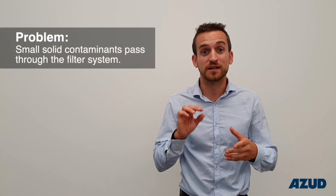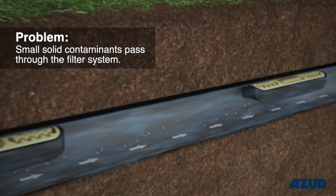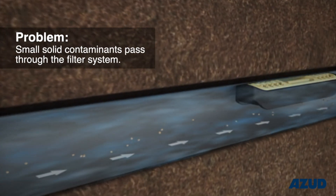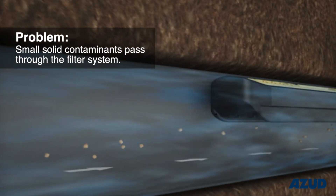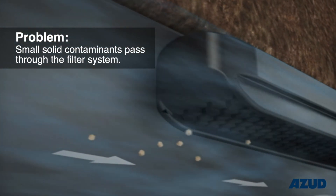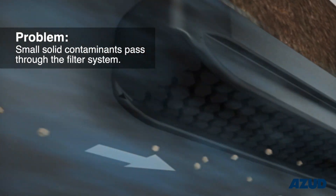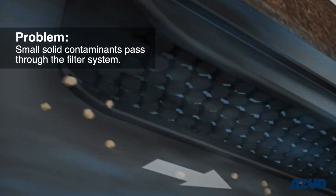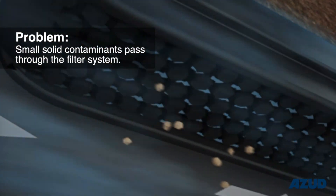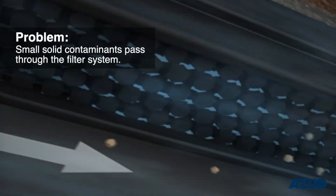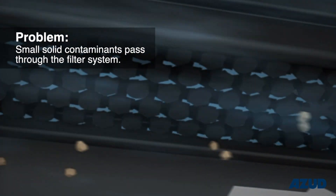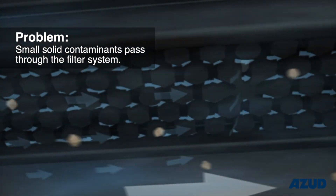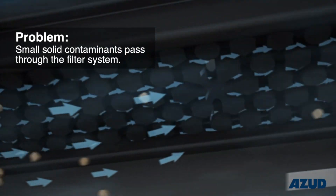The second most common problem is when small contaminants pass through the filtration system and deposit inside the drip lines and pipes. Due to the low water speed, these small contaminants accumulate and can clog the emitters as well.